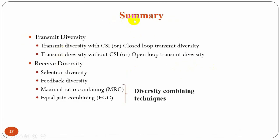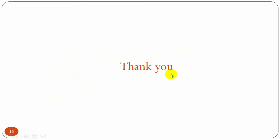In this video we have discussed about transmit diversity and its types — transmit diversity with CSI or closed-loop transmit diversity, and transmit diversity without CSI or open-loop transmit diversity. In receive diversity, we have discussed selection diversity, feedback diversity, maximal ratio combining, and equal gain combining. Thank you for watching this video.